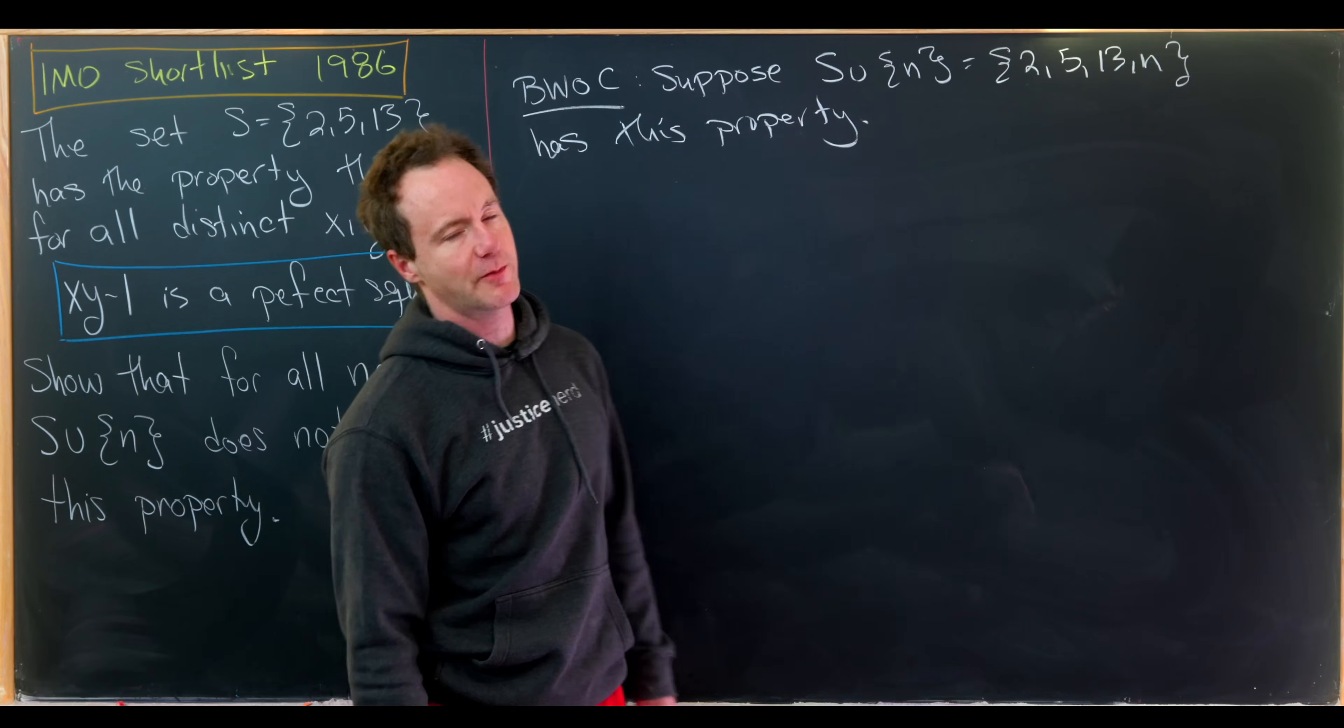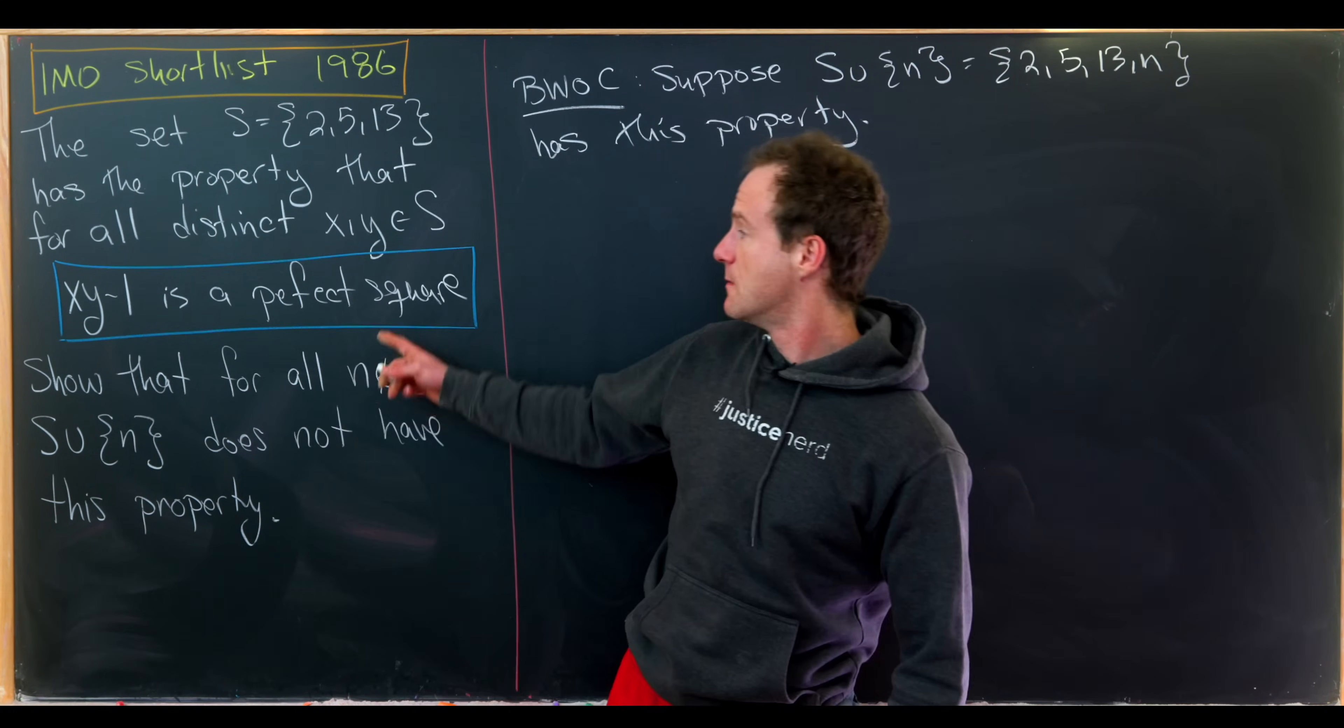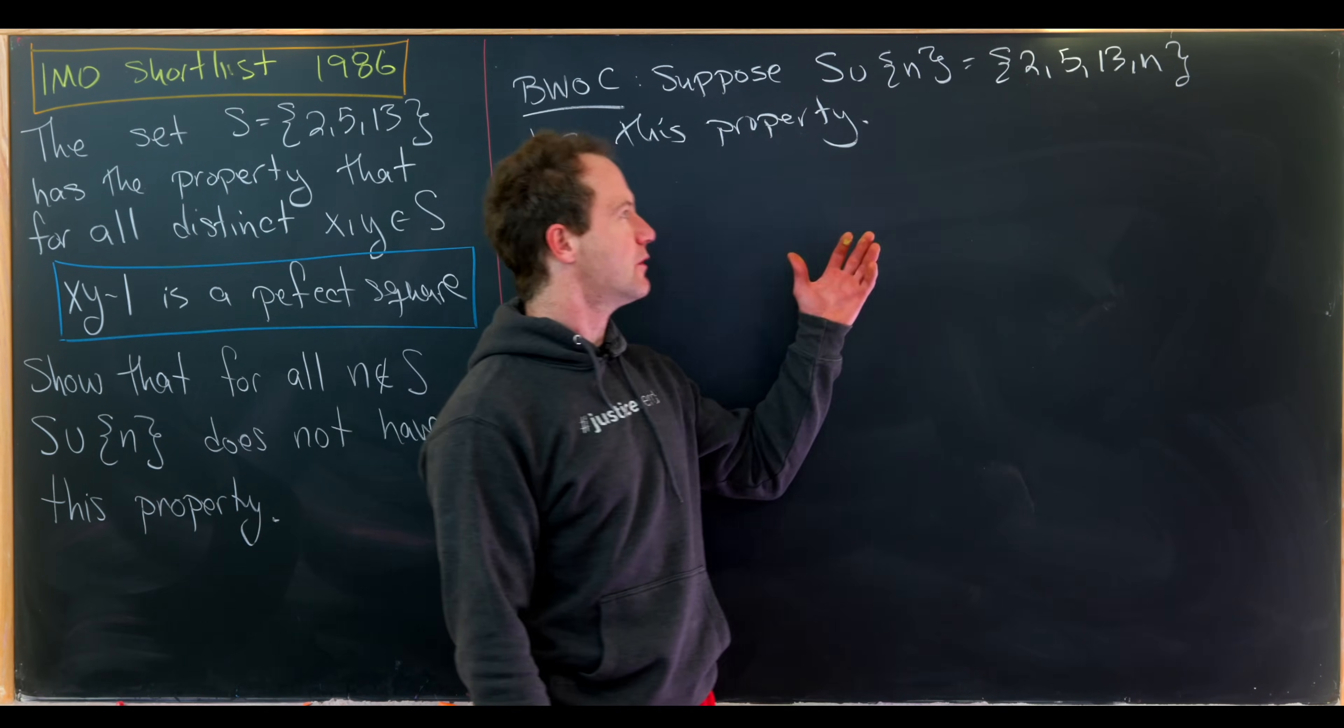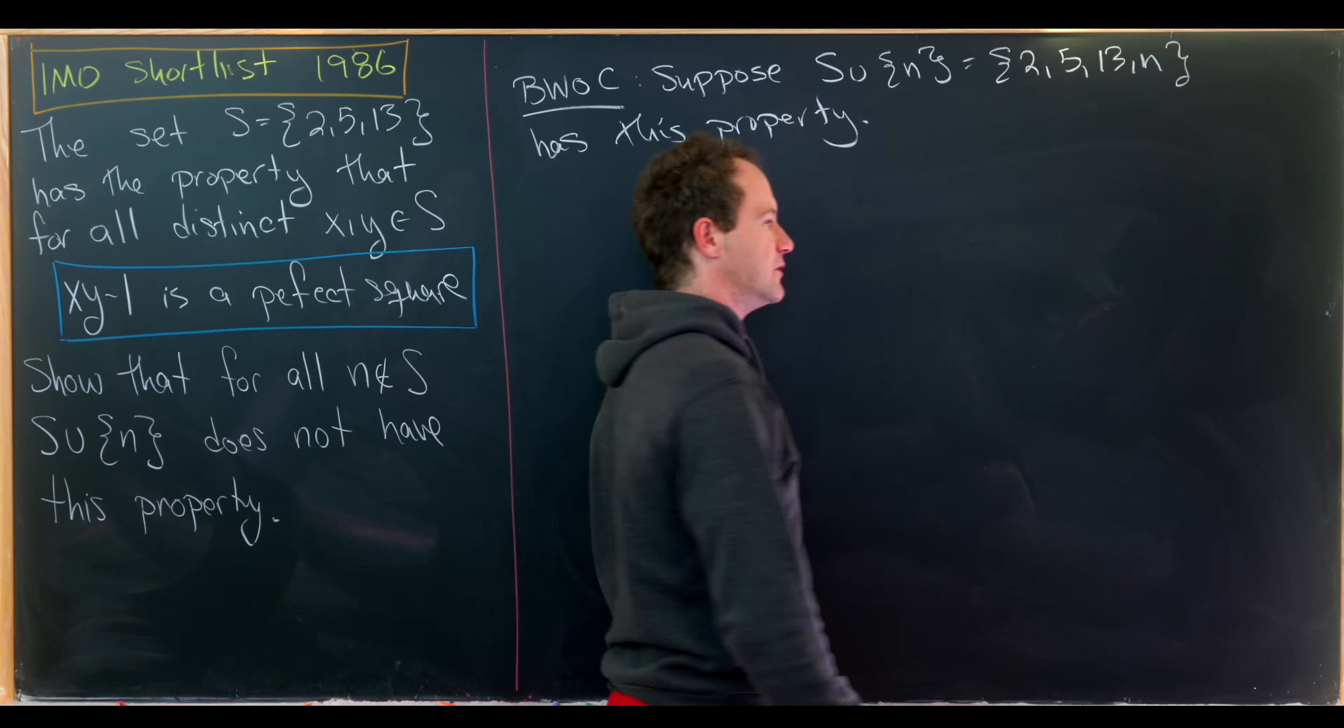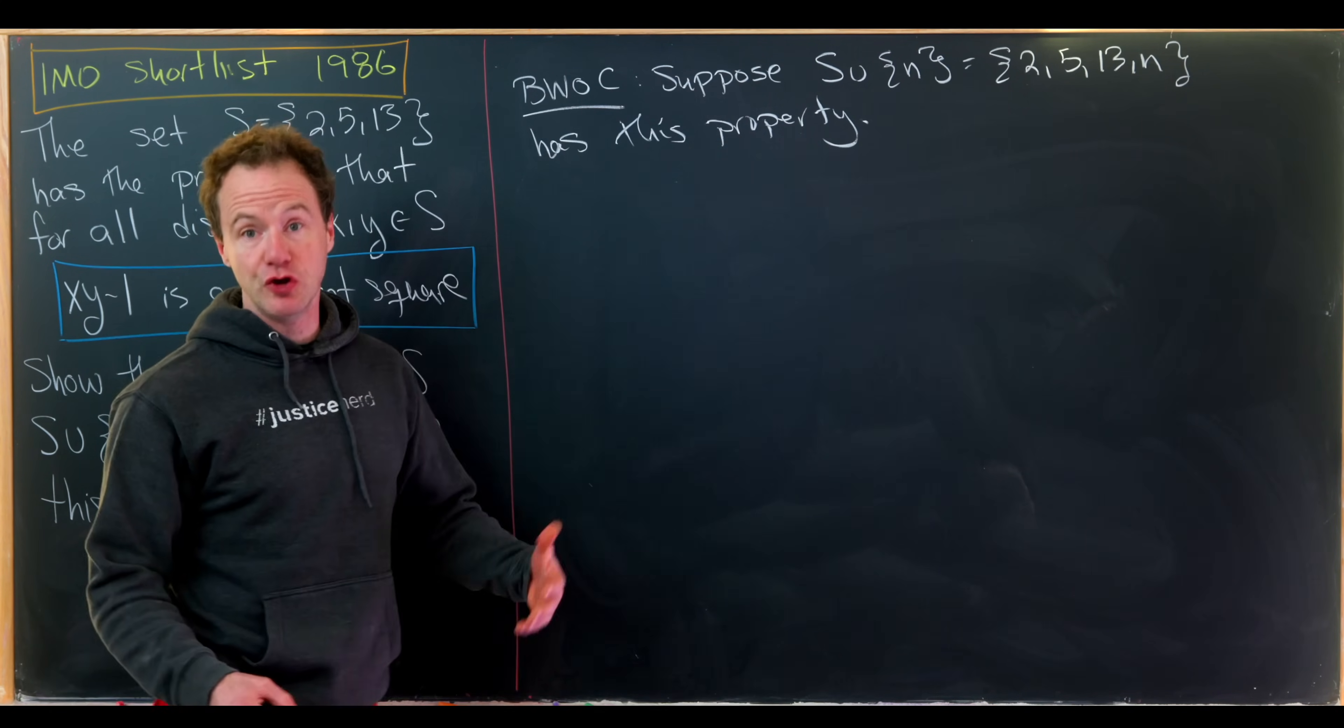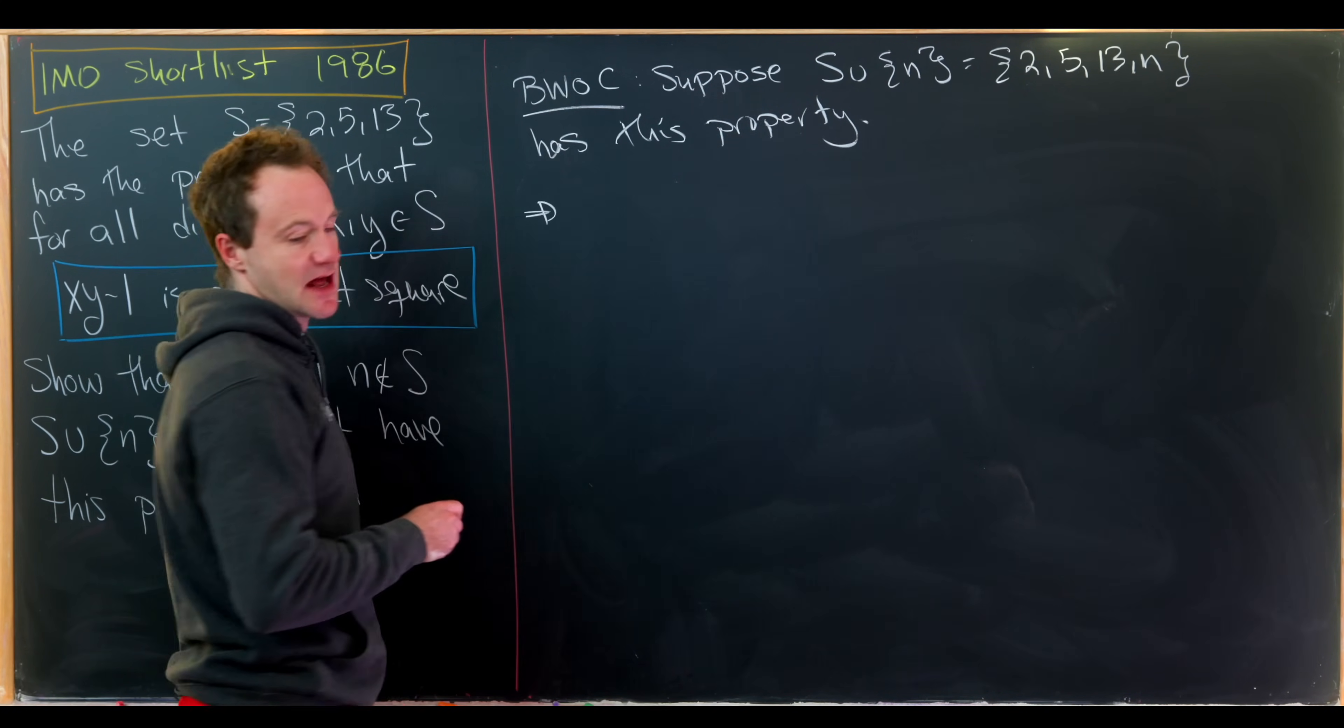By has this property I mean if we take two distinct numbers from that set, multiply them, subtract one, we get a perfect square. So we know it's true if we take those two numbers from the set 2, 5, 13 by what we checked before. So all we really need to do is to take 2, 5, and 13 paired with our new number n. Okay, so that gives us a nice set of equations.